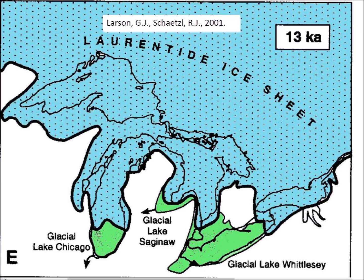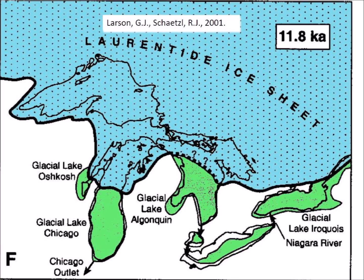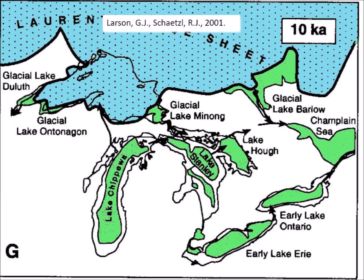Just 200 years later, at 13 thousand years before the present, Larson and Shetzo illustrate Lake Huron and Saginaw Bay covered with ice. This is the time of the onset of the Younger Dryas, and this ice coverage agrees with the image provided by Dyke in 2004 and with the image by Eschmann and Mickelson in 1986 that I provided to Graham Hancock for his book. Thus, the 2001 paper by Larson and Shetzo confirms that ice covered Saginaw Bay at the onset of the Younger Dryas. At 11.8 thousand years before the present, the ice receded, and by 10 thousand years before the present, the ice had receded further.